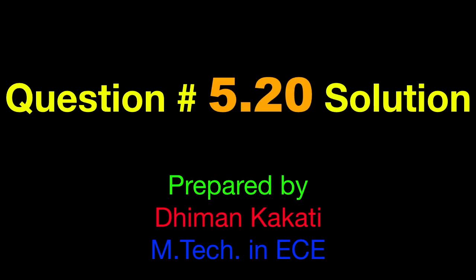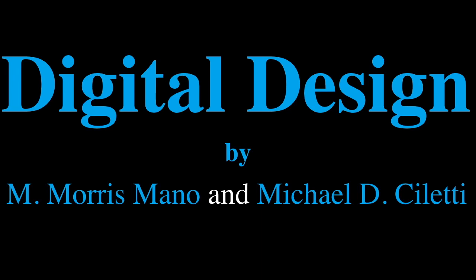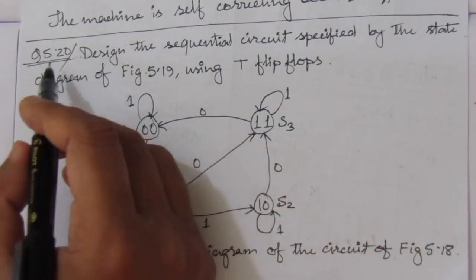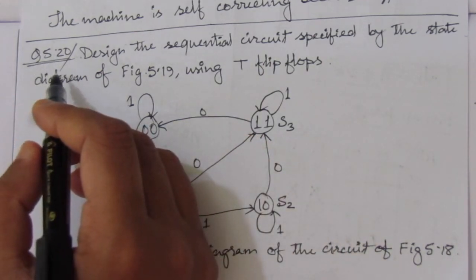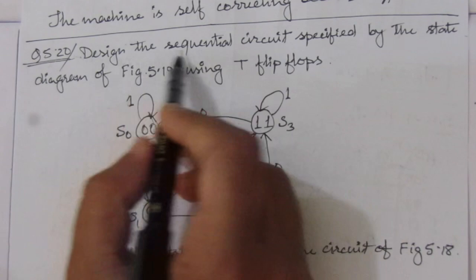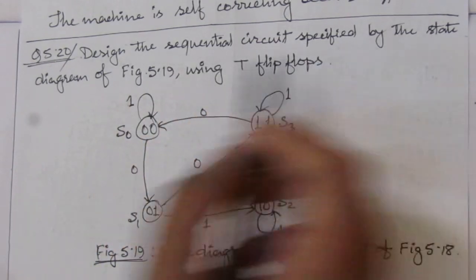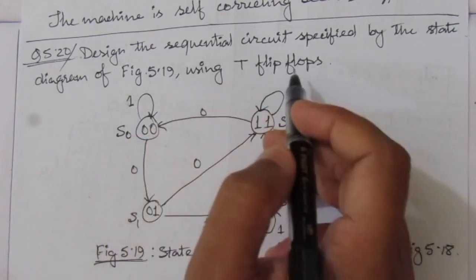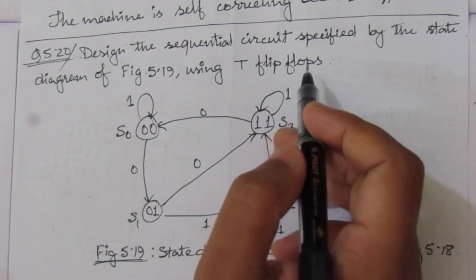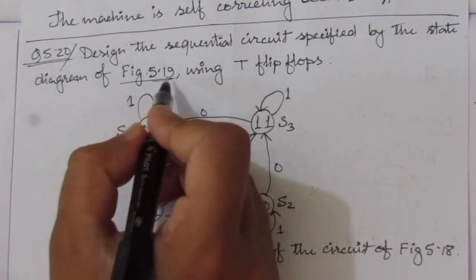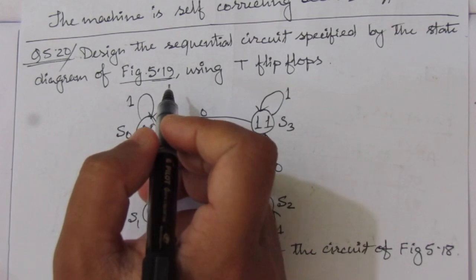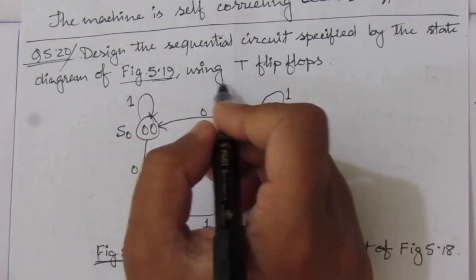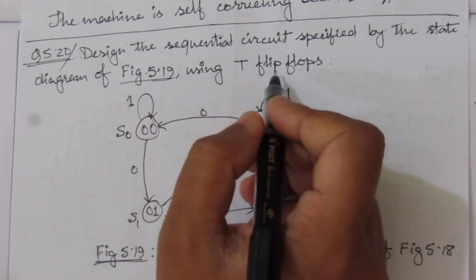Dear students, I welcome you all to this problem-solution series in digital electronics. I am solving the problems from the book Digital Design by Maurice Mano and Michael Cileti. In this video, I am solving problem number 5.20 from chapter number 5.